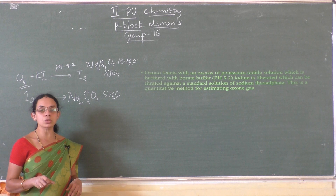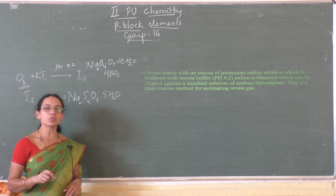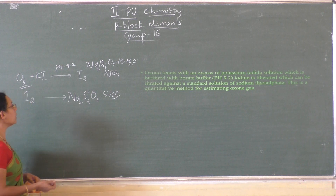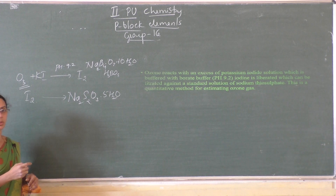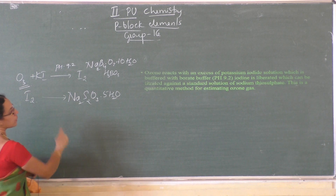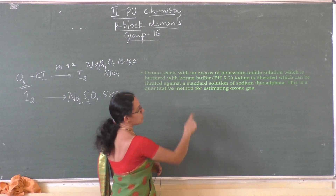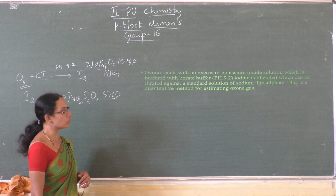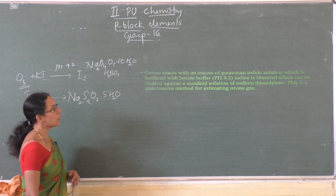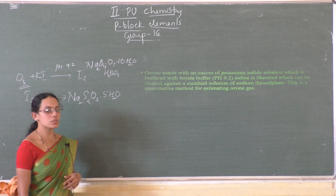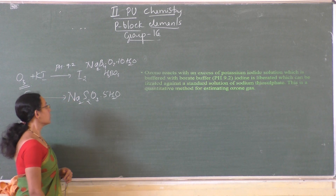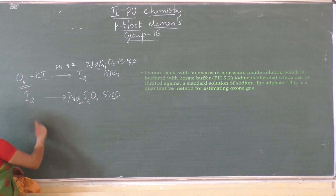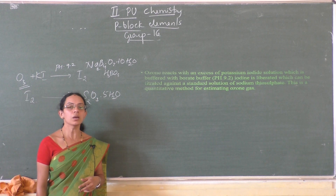This is one of the methods to find out the amount of ozone present in a given sample. Ozone is treated with excess potassium iodide solution buffered with borate buffer of pH 9.2; iodine is liberated. That liberated iodine is titrated against the standard solution of sodium thiosulfate. From the amount of sodium thiosulfate consumed we can get the amount of iodine liberated, and in turn the amount of ozone present in the given sample.